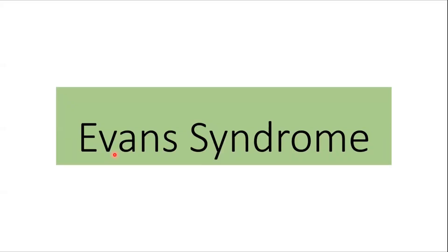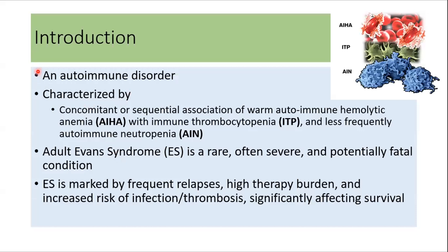Today we'll discuss Evans syndrome. It is an autoimmune disorder characterized by autoimmune hemolytic anemia along with immune thrombocytopenia, and in some cases autoimmune neutropenia as well. These conditions can occur together or one can occur first followed by the other. This is a rare syndrome, however it is often severe and sometimes even fatal, marked by frequent relapses, high therapy burden, and increased risk of infection and thrombosis, which significantly affects patient survival.